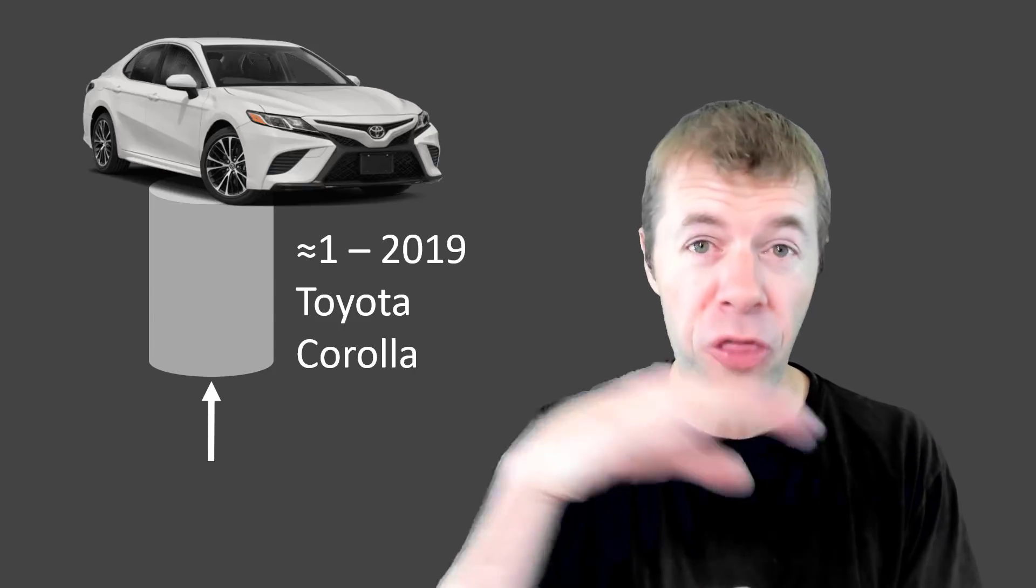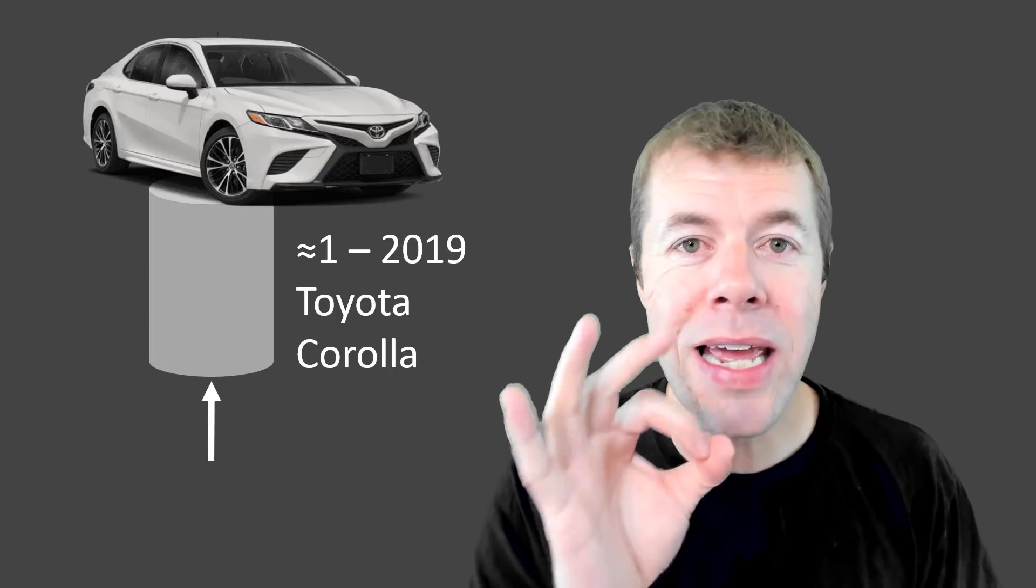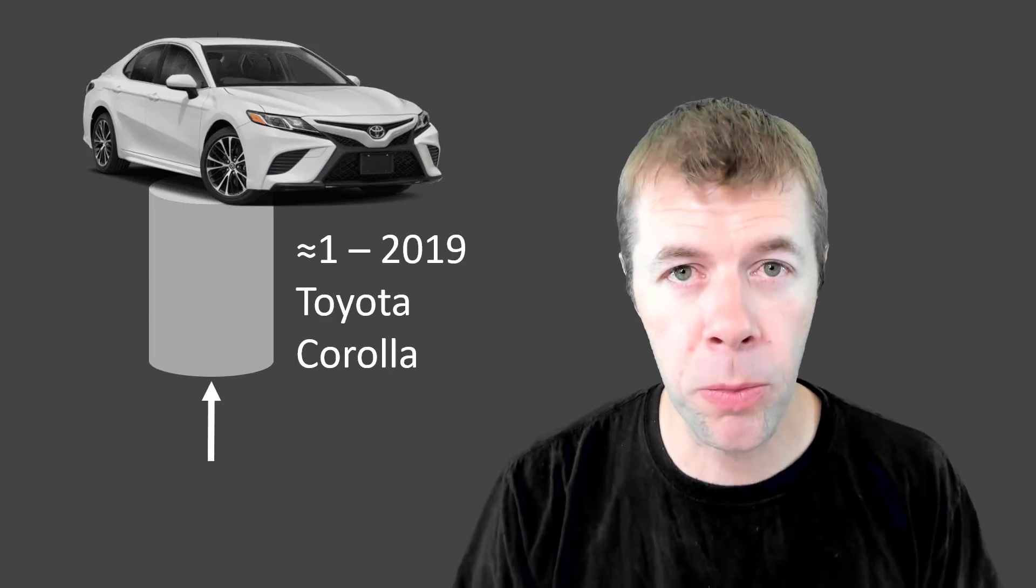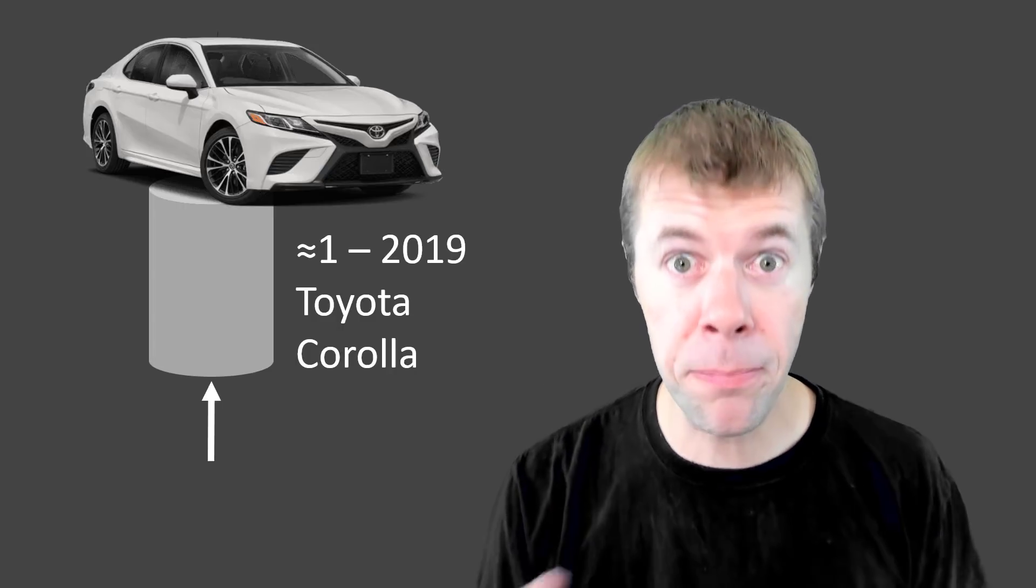this one inch diameter normal strength concrete can hold a 2019 Toyota Corolla. Yeah, we can put the entire car up on a one inch diameter piece of normal strength concrete. This is some pretty strong stuff.